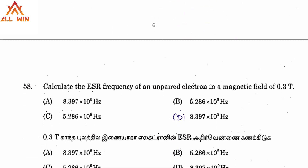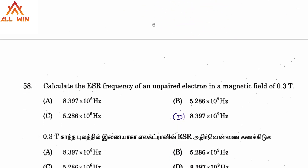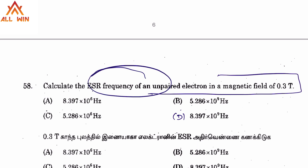The next question asks us to calculate the ESR frequency of an unpaired electron in a magnetic field of 0.2 Tesla.